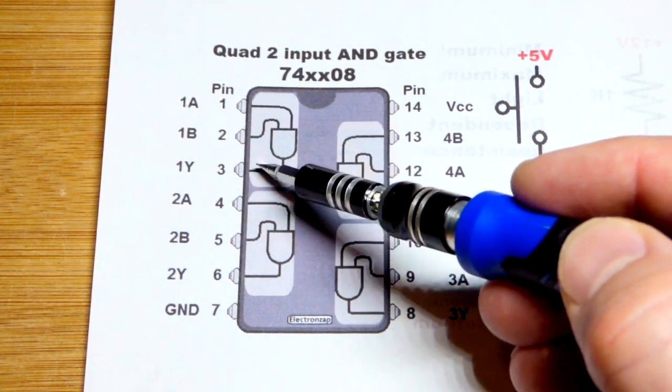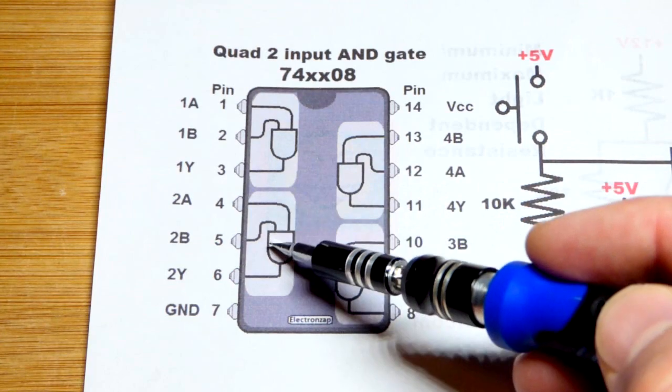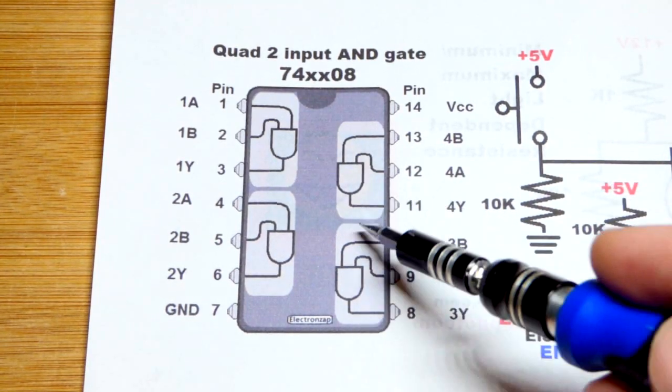We've got two inputs above the output, and then the same for that one. These are the two we're going to use. These two, we're not going to use them.